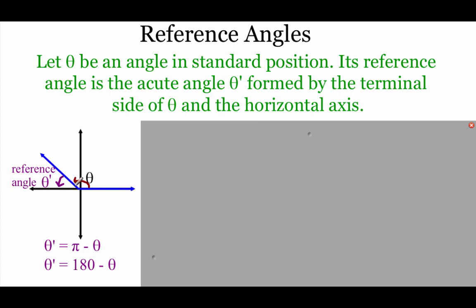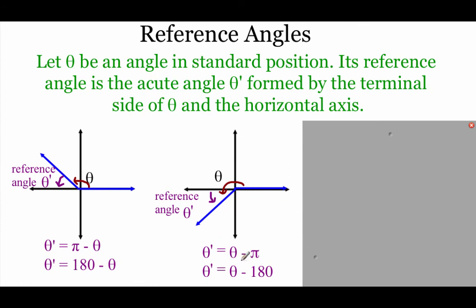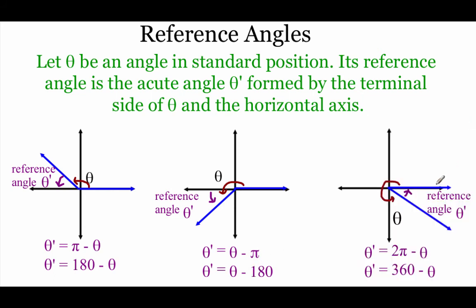If theta lands in the second quadrant, the reference angle is pi minus theta, or 180 minus theta in degrees. If theta is in the third quadrant, it's theta minus pi, or theta minus 180 in degrees. If theta is in the fourth quadrant, the nearest horizontal axis is 2 pi, so the reference angle is 2 pi minus theta, or 360 minus theta in degrees.